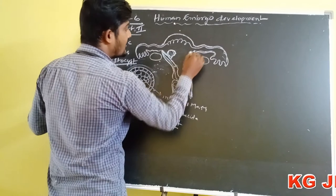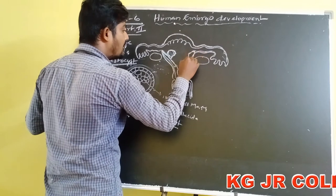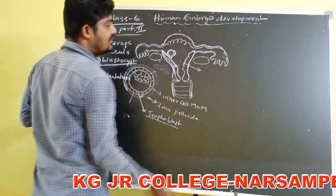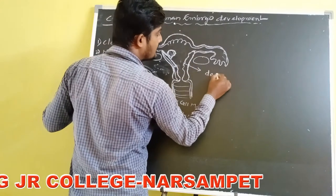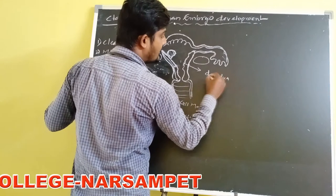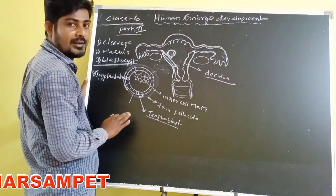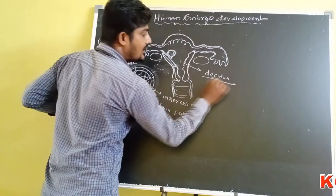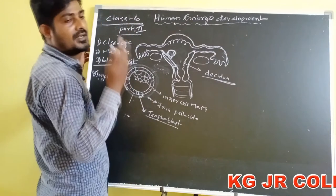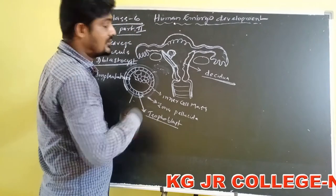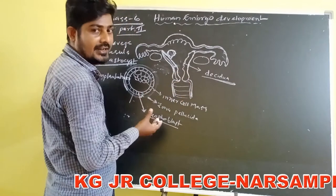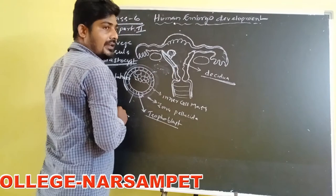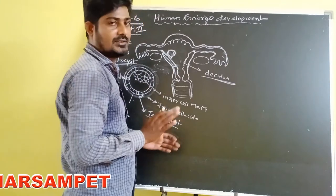After implantation, the endometrium of the uterus is differentiated into the decidua. Decidua means the shed-off layer during delivery. The decidua is differentiated into three types.